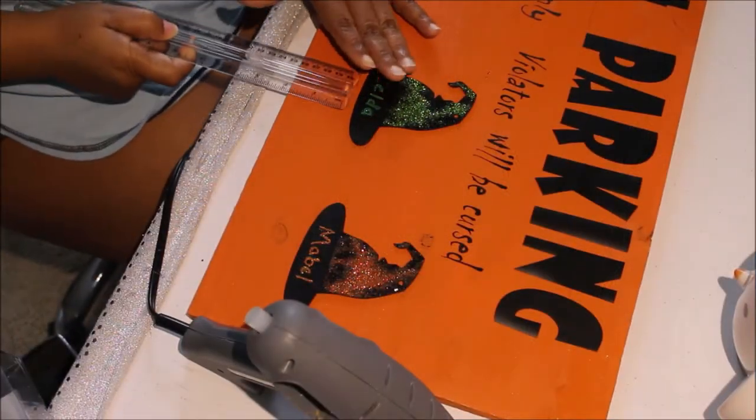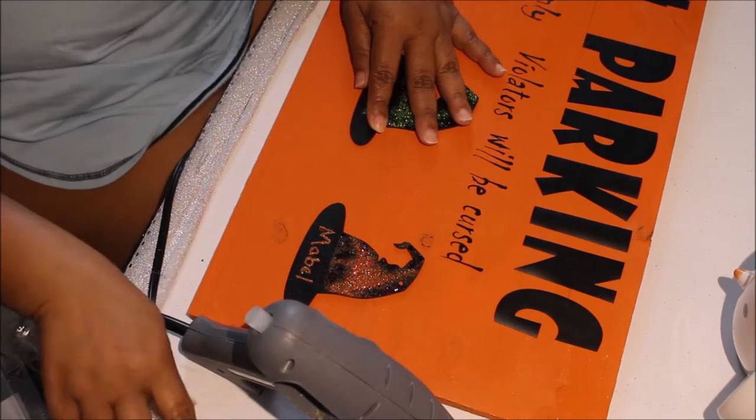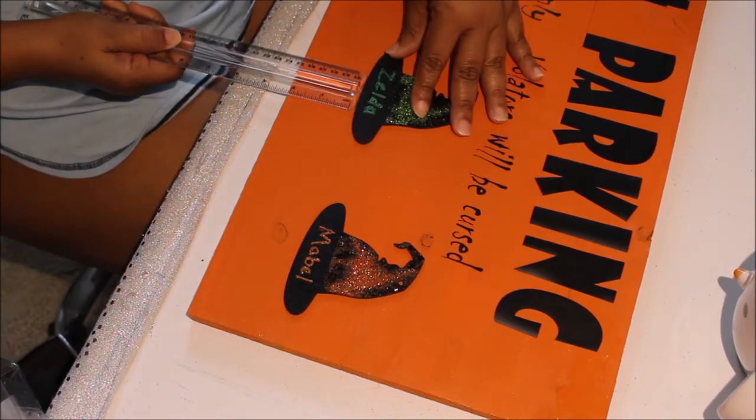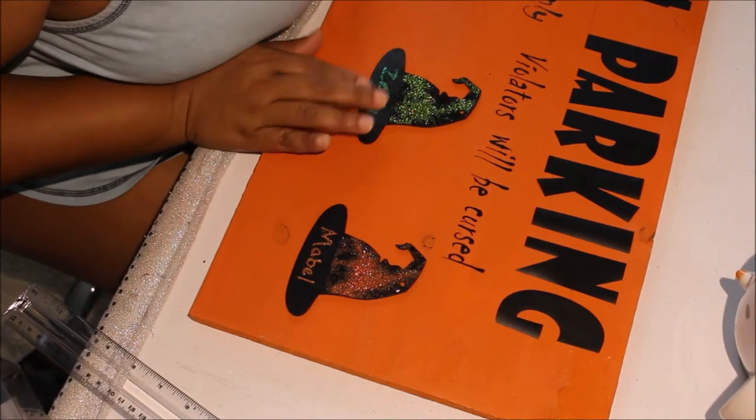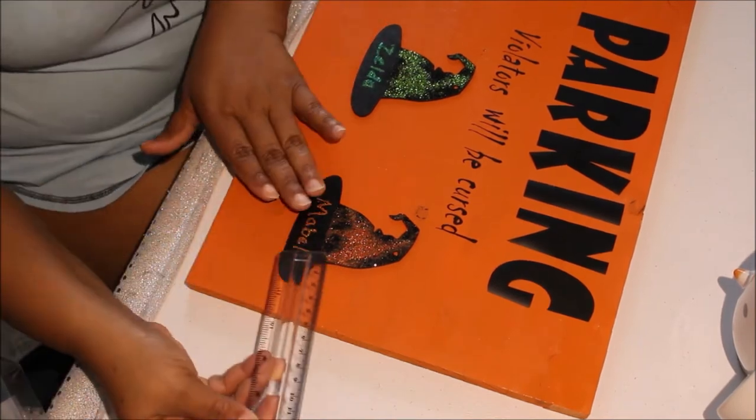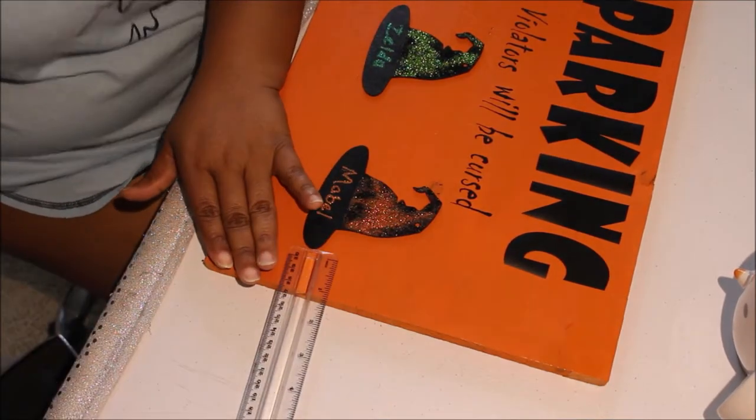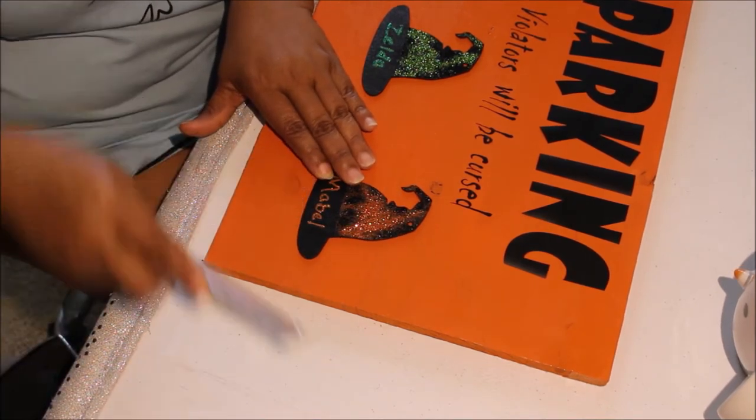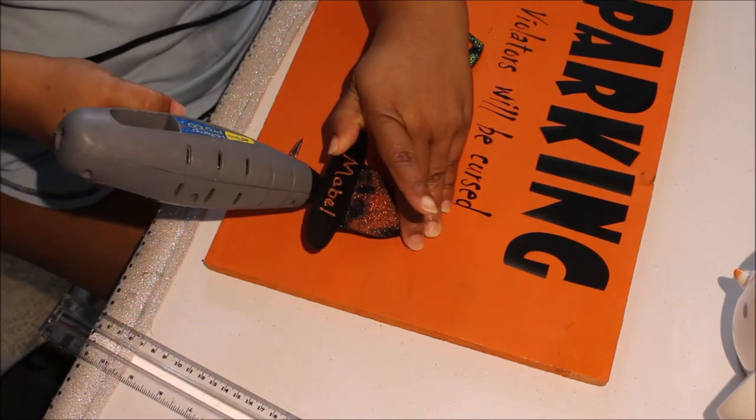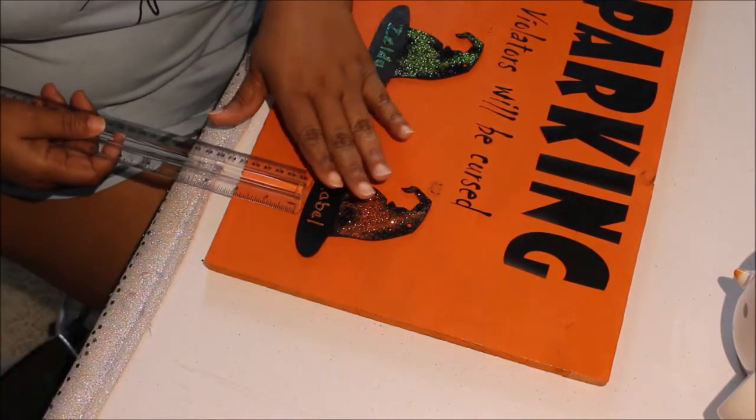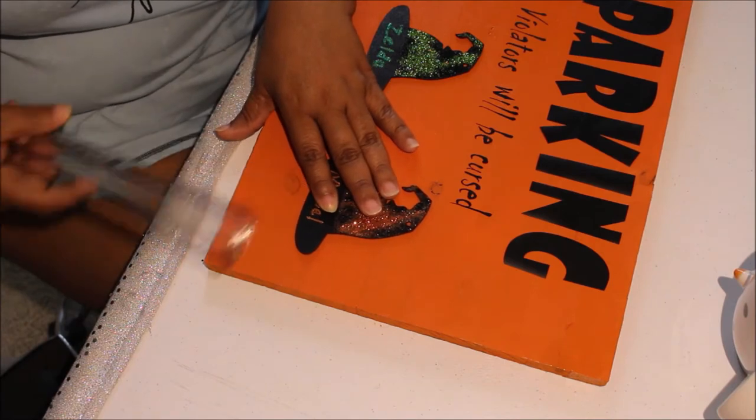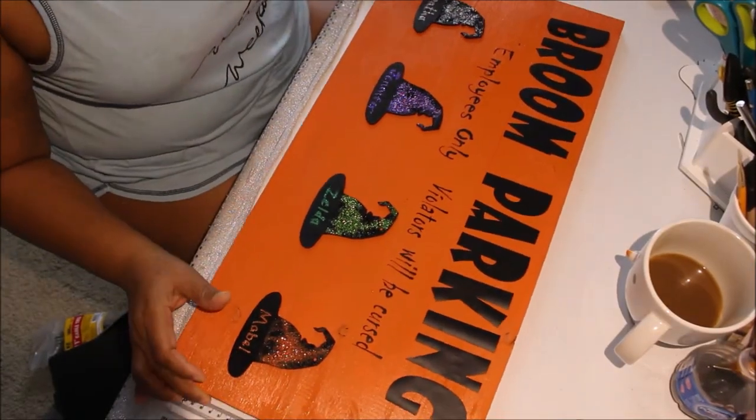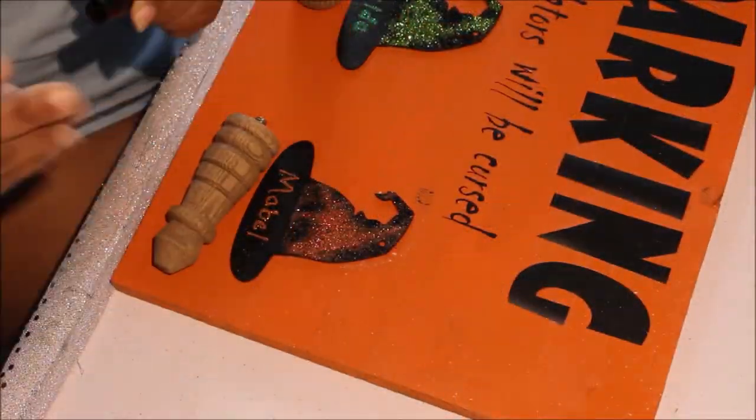Right here I'm just measuring, I think two inches from the bottom of the sign, and attaching my witch hats. I'm using gorilla hot glue so they're not going to go anywhere, but if you want to use E6000 or something like an industrial adhesive you can definitely do that. It's two inches from the bottom and I think it was an inch and a half from the sides. I just wanted to make sure everything was even and centered.